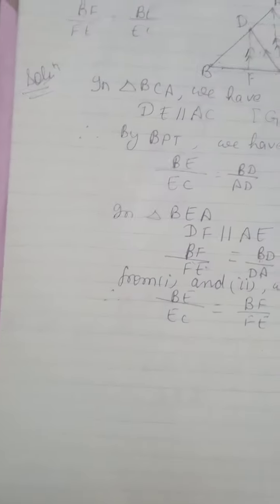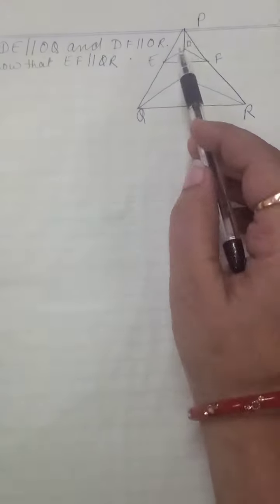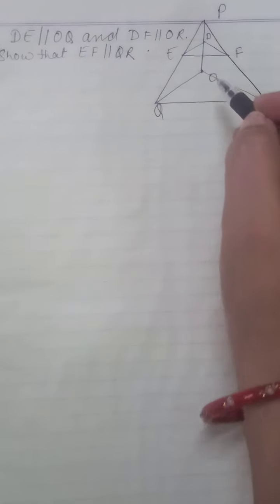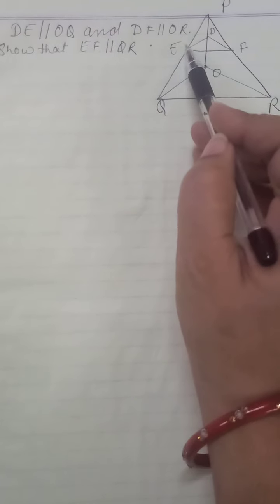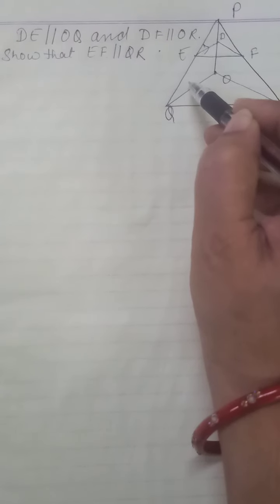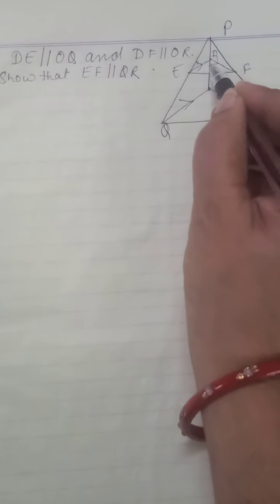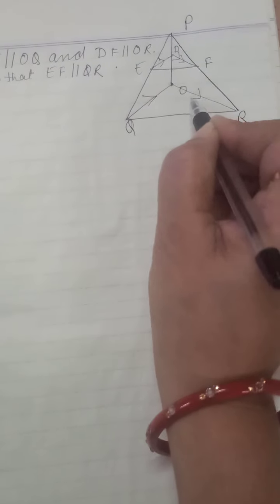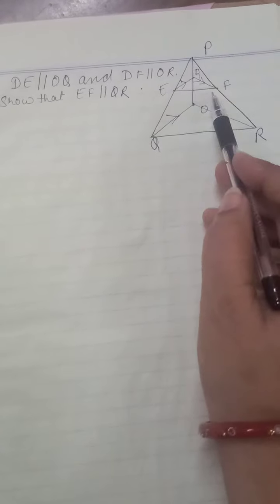The right-hand sides of both equations are equal — both equal BD upon AD. Therefore we can say BE upon EC is equal to BF upon FE. This is exactly what we needed to prove. Hence proved.